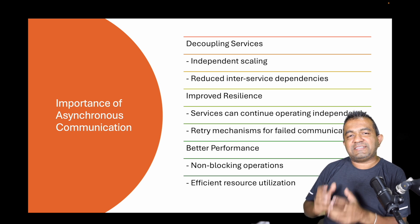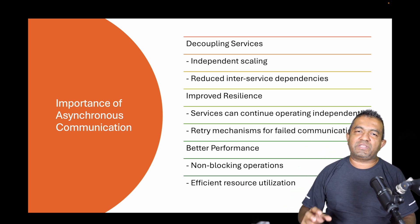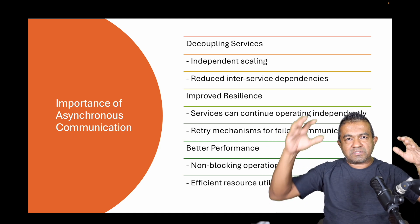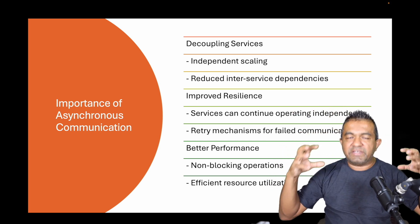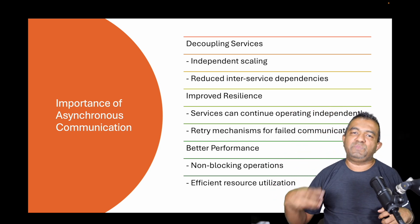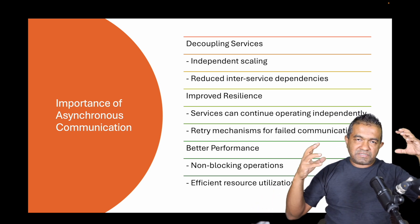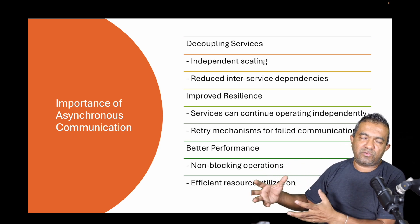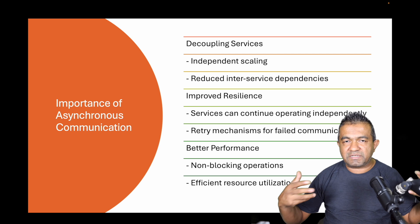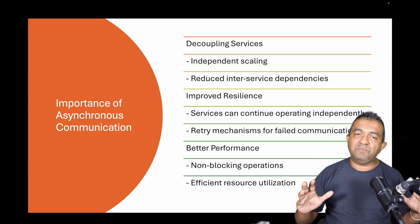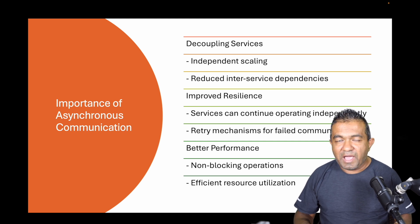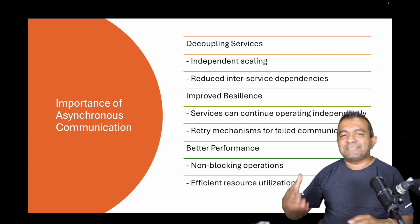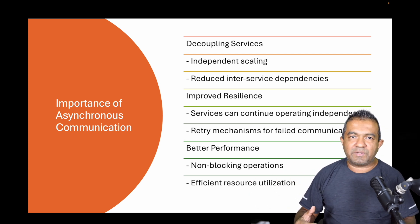Now, why is asynchronous communication important? The first and most important thing is decoupling services. Service A and service B don't talk to each other directly — they communicate via a message broker, so they are very decoupled. Service A can scale independently and service B can scale independently. They don't have tight coupling with each other, so they can work independently on their payload and structures. You can publish and consume from different versions on different topics. That freedom is very important in production systems — post-production is really hard to change things, so decoupled architecture is critical.